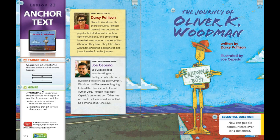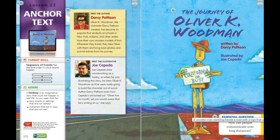As you preview, you're going to identify other features of fantasy. Let's first look at the title page. The Journey of Oliver K. Woodman — here we can clearly see that he is a wooden figure. He's holding a sign that says, 'California or bust.'